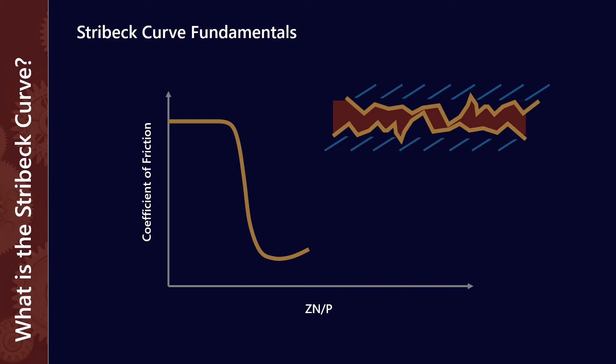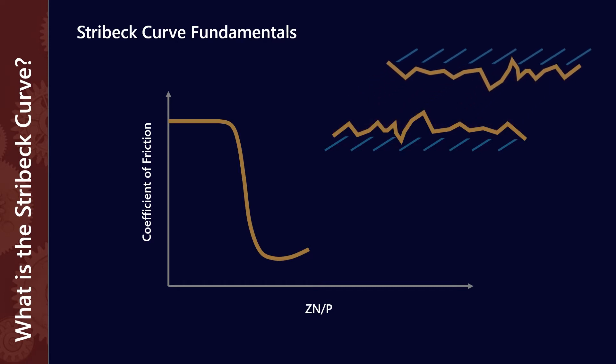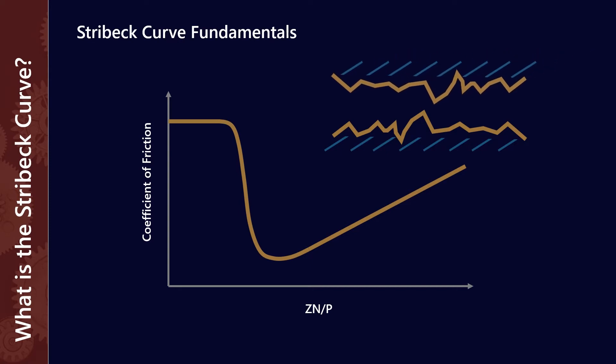The final part of the curve is what we call the hydrodynamic section, where we have a full lubricant film that supports the load of the two surfaces — so we have almost complete separation. Those are the three major components.